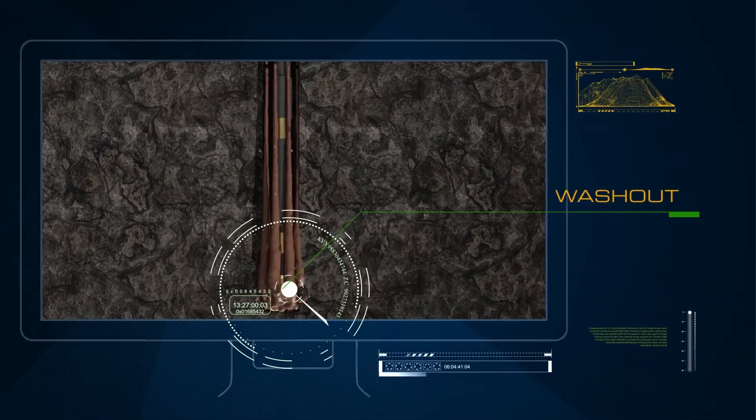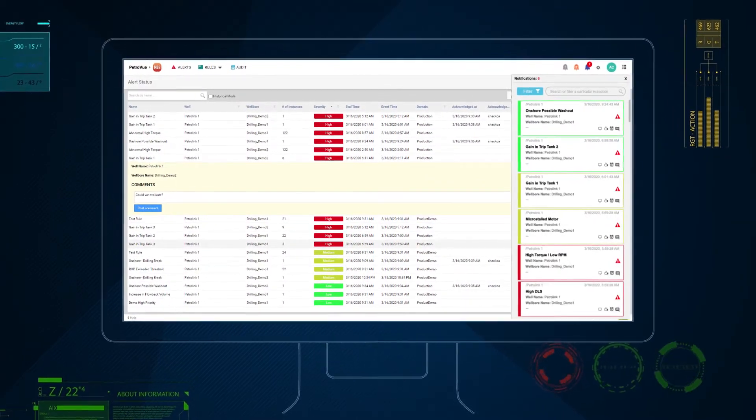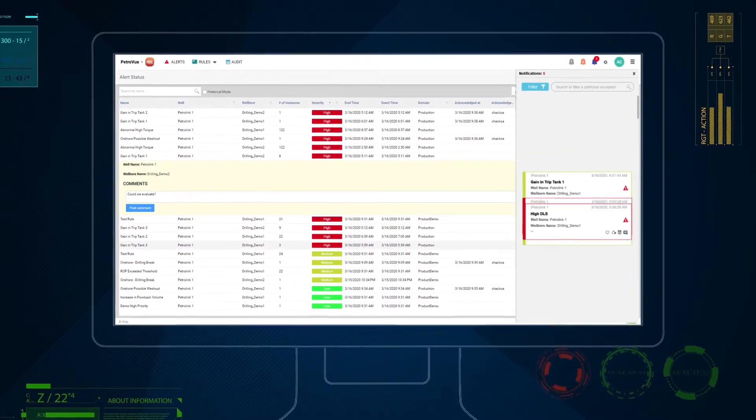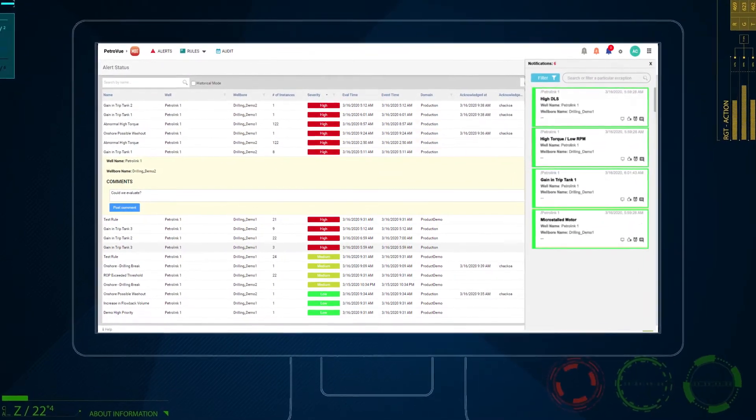Another potential scenario is a washout. The alerts start flashing and a notification is sent to the status window on the console. Again, because the correct person was notified, the situation was accurately assessed and determined not to be a concern, so operations continued without costly delays.